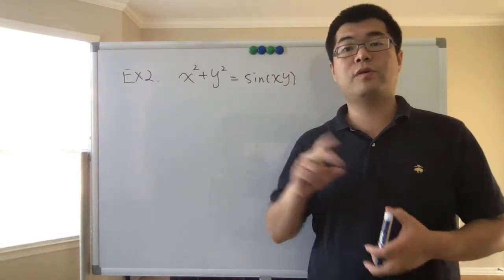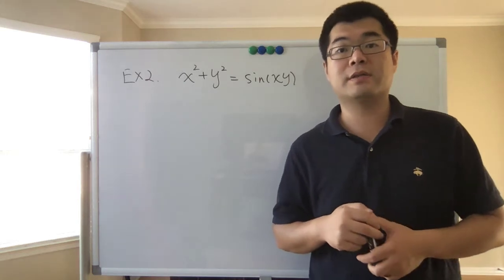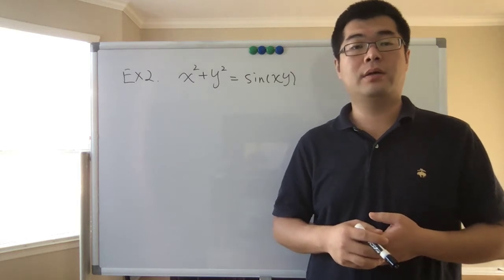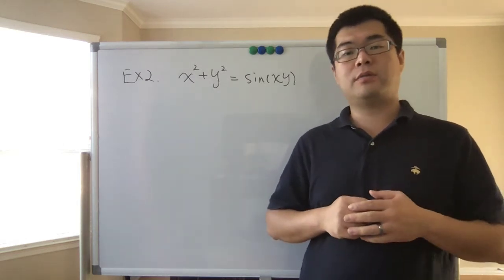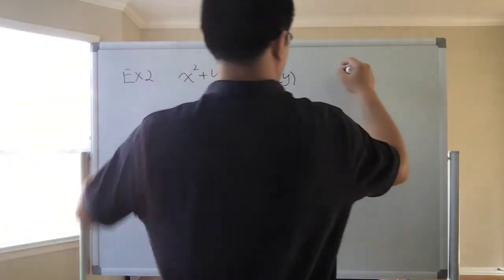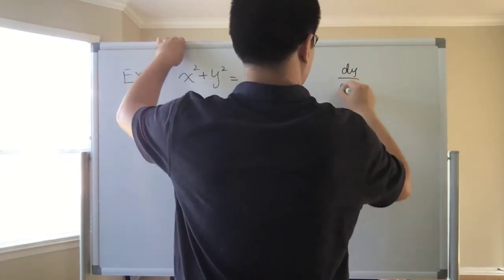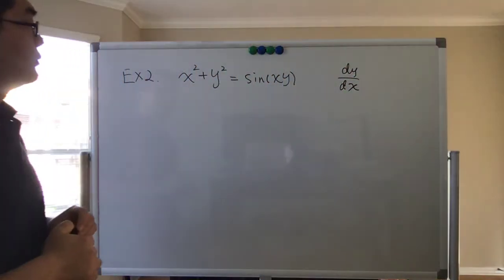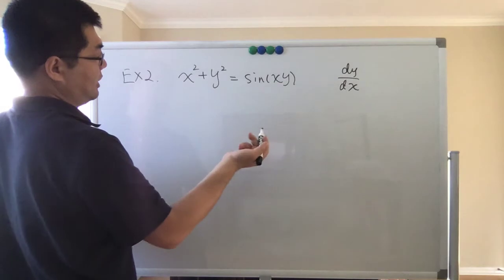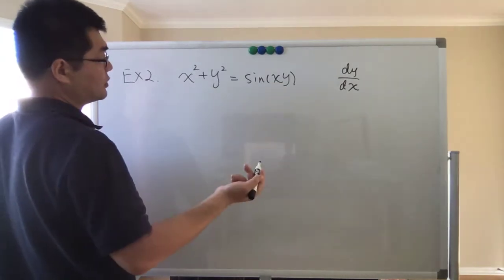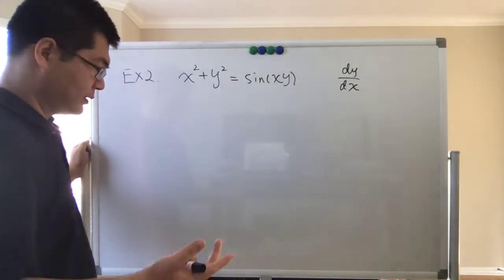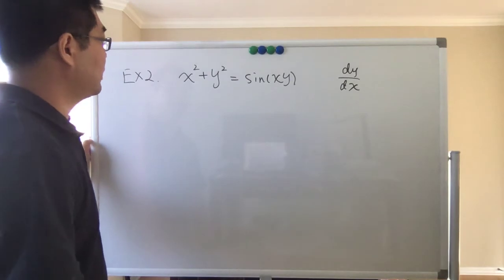Let's continue to discuss two more examples about implicit differentiation, and then we'll finish this section. So look at this problem: x squared plus y squared equals sine of xy, and the problem asks us to find dy/dx. As you can tell, it's very challenging — it's almost impossible to write y in terms of x explicitly. That's why we use implicit differentiation.